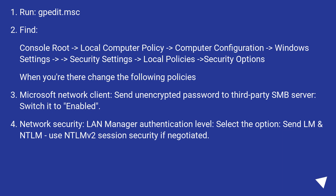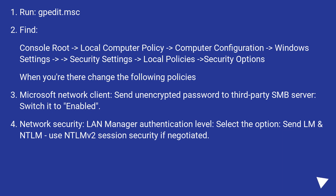Run secpol.msc. Navigate to Local Computer Policy > Computer Configuration > Windows Settings > Security Settings > Local Policies > Security Options. Change the following policies: 'Microsoft Network Client: Send unencrypted password to 3rd party SMB server' — switch it to Enabled. Also change 'Network Security: LAN Manager Authentication Level' — select the option 'Send LM and NTLM — Use NTLMv2 session security if negotiated'.